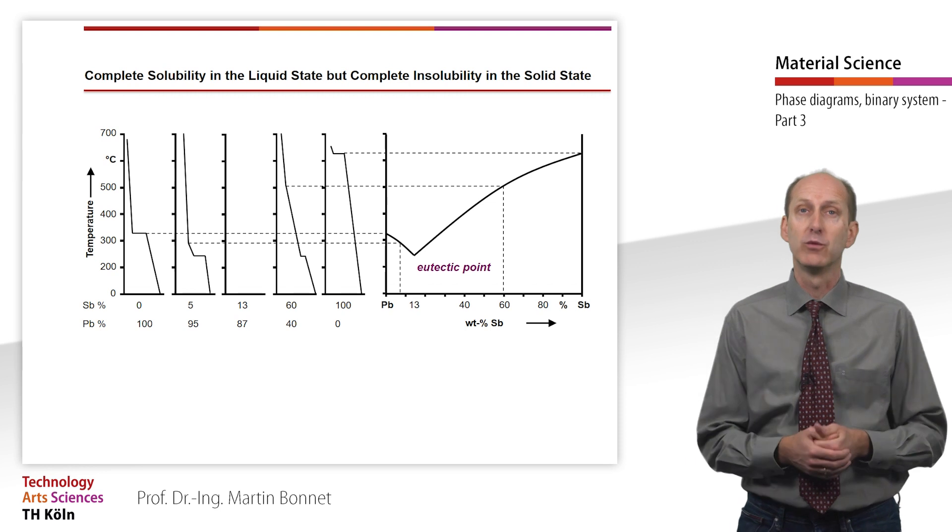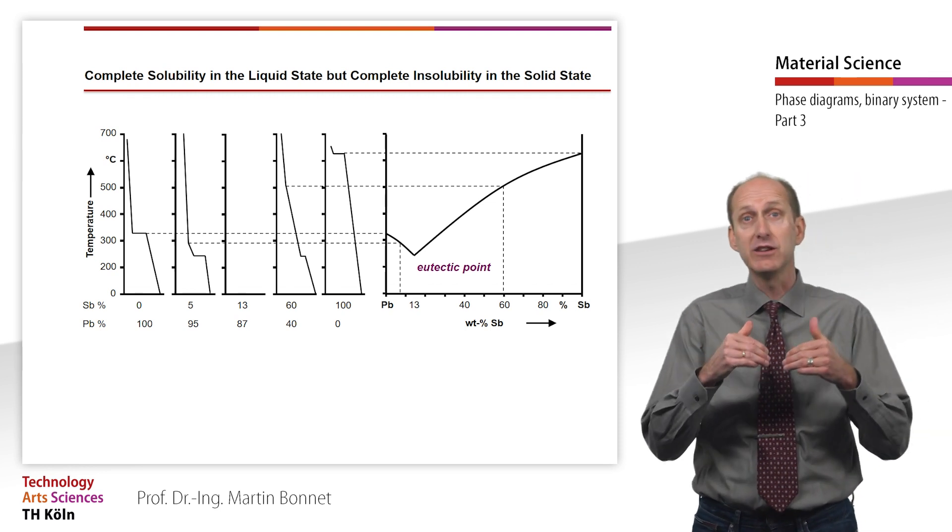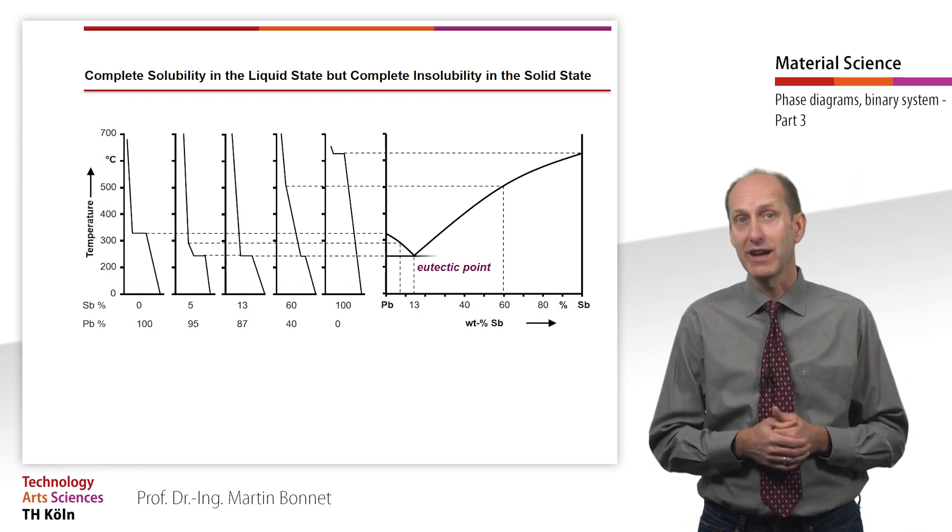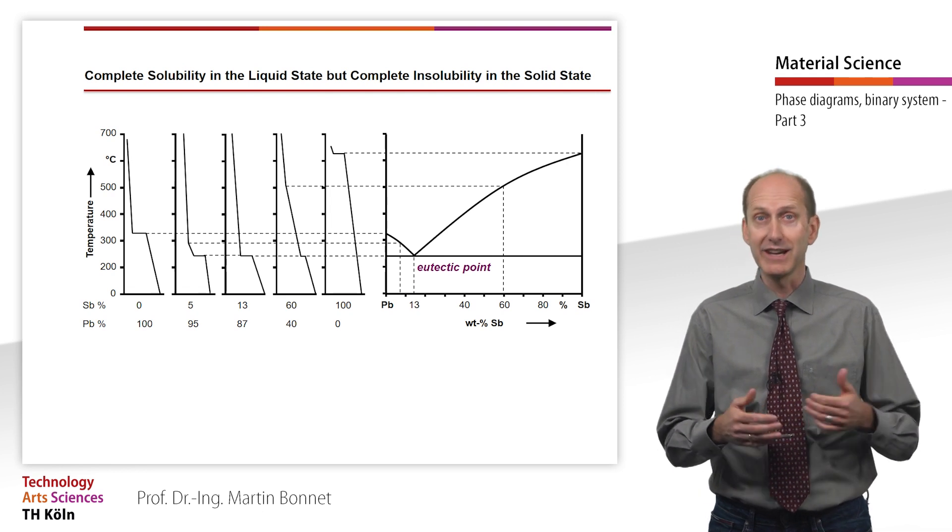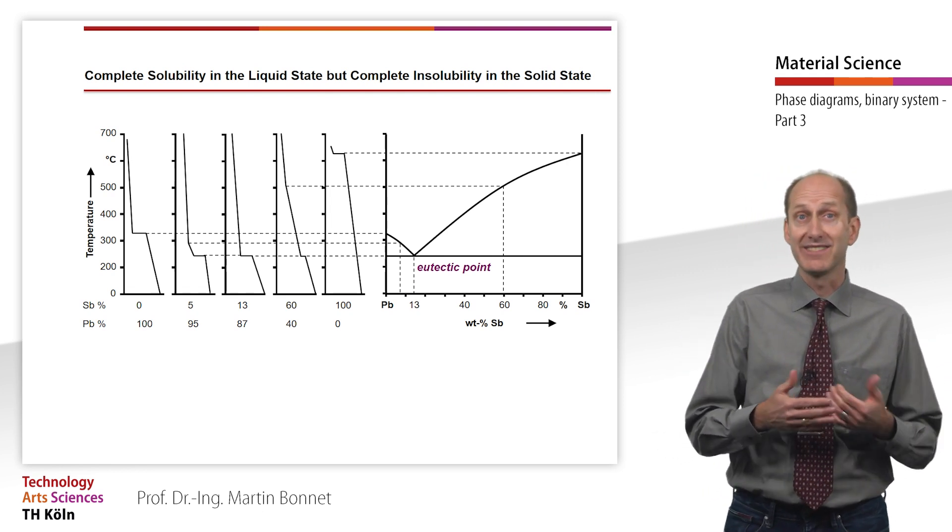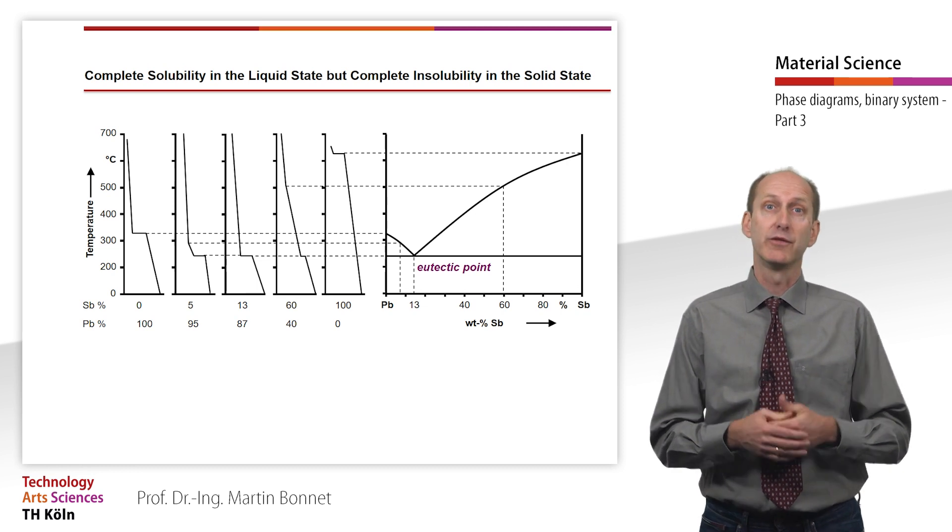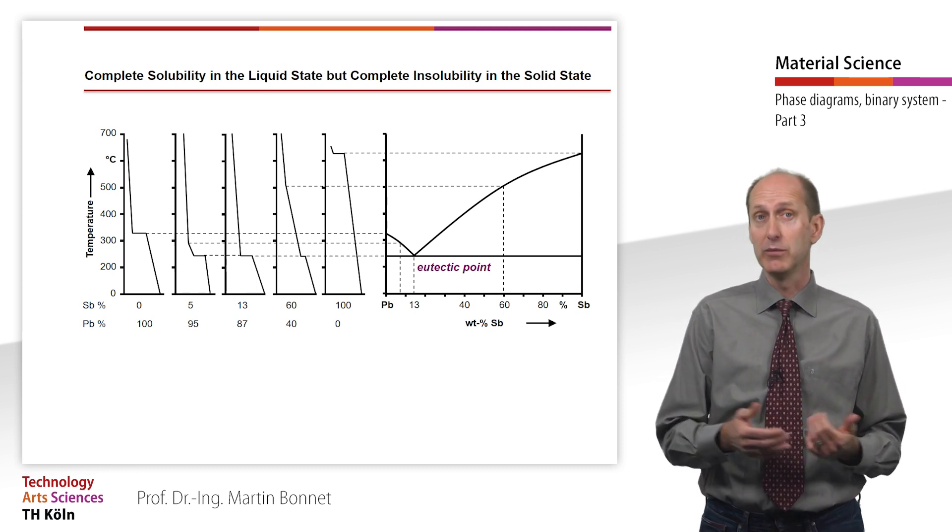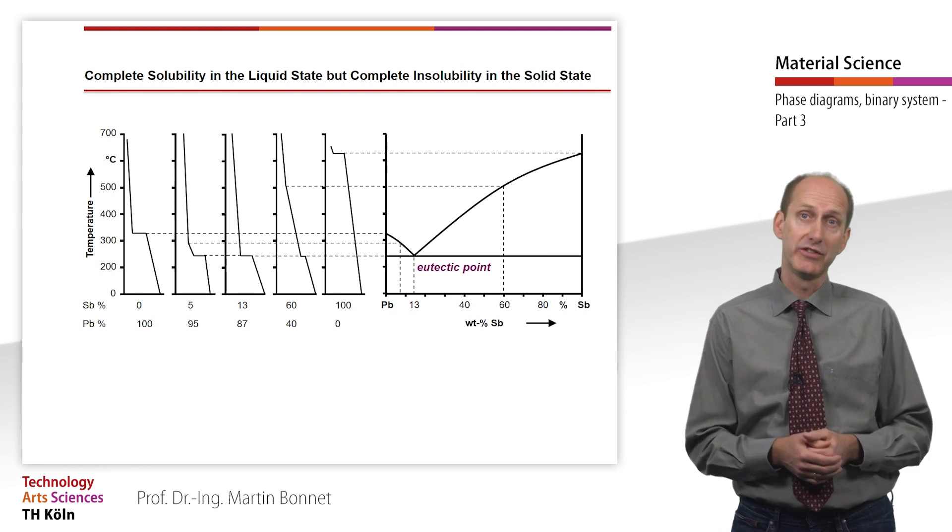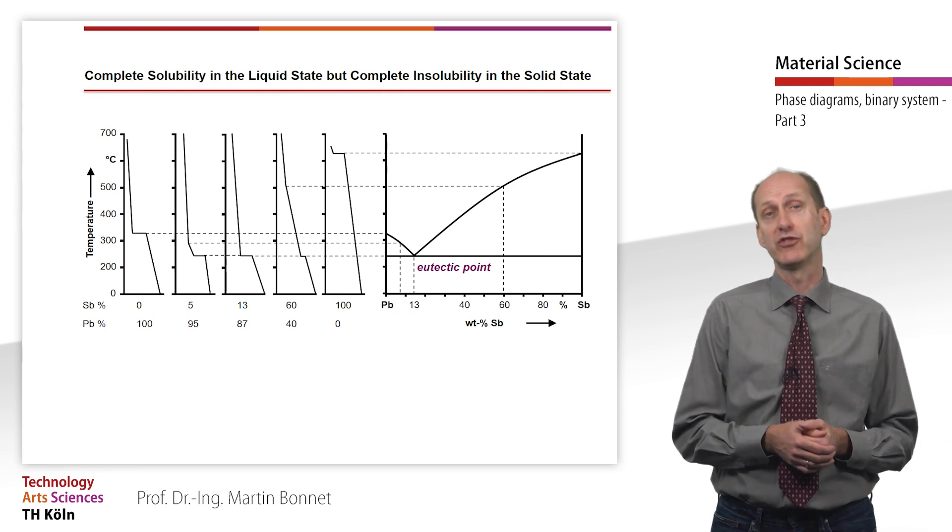The point at which the sloping lines intersect is called the eutectic point. The eutectic alloy does not solidify within an interval but at a fixed temperature like a pure metal. In our example, this alloy is 13% antimony.